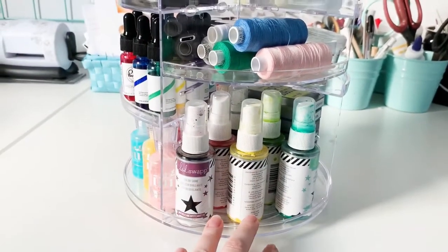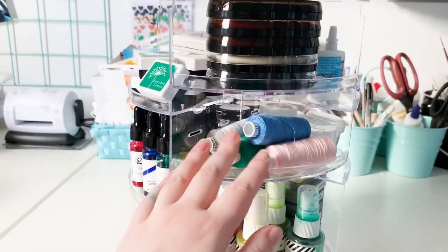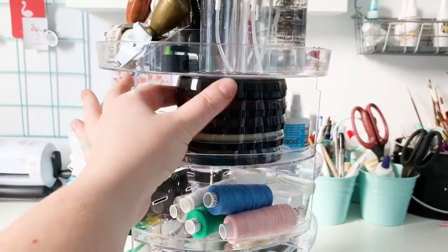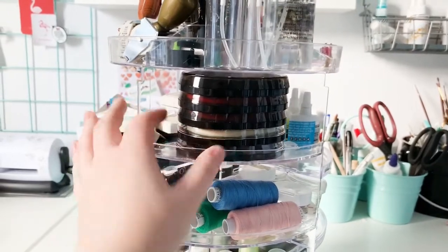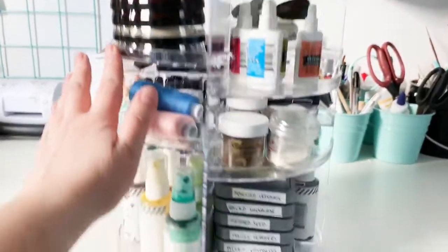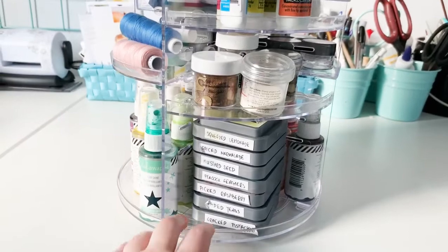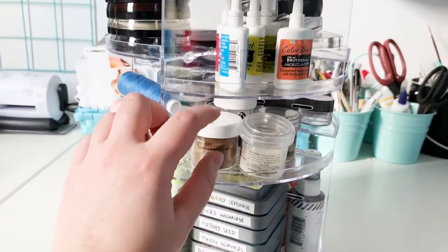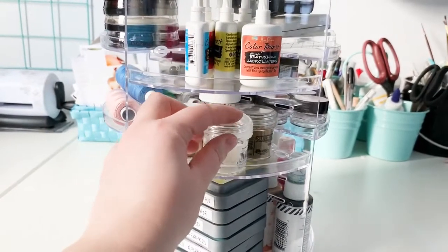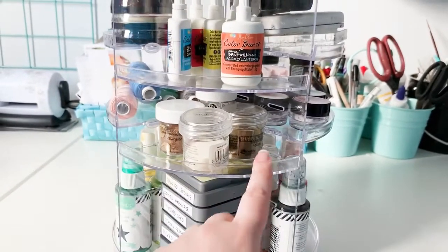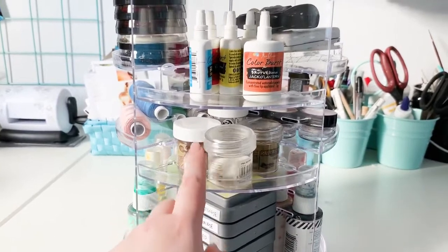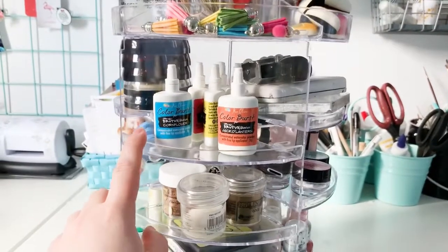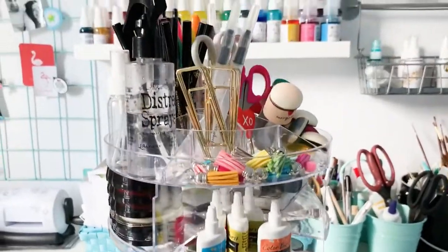I have a few of the threads I use most often, some scrapbook.com inks that I also use most often, a set of my favorite Distress Oxide inks, a few of my favorite embossing powders - rose gold, gold, white, and transparent - and some of the powdered watercolors.